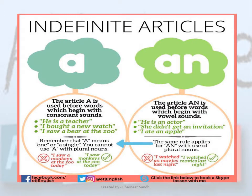Indefinite article 'A' is used before words beginning with consonant sounds or consonants. Look at these examples: 'He is a teacher' — the noun here is 'teacher' which begins with T, and T is a consonant. 'I bought a new watch.' 'I saw a bear at the zoo.'